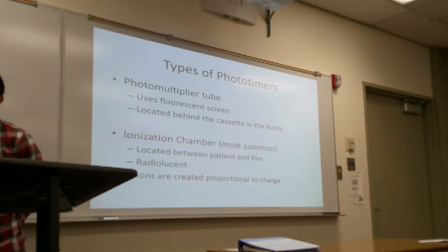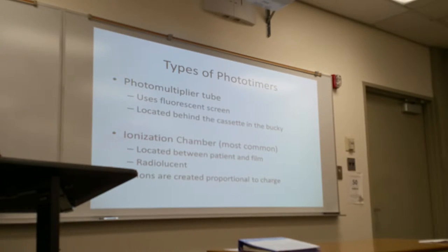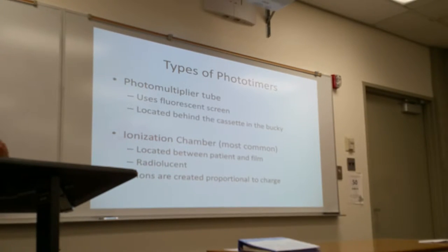With the phototimer, it uses a fluorescent screen that's generally located behind the cassette and the bucky. As x-rays go through and interact with the screen, it becomes luminous to a certain point. As it hits that certain degree of brightness, it will automatically terminate the exposure.